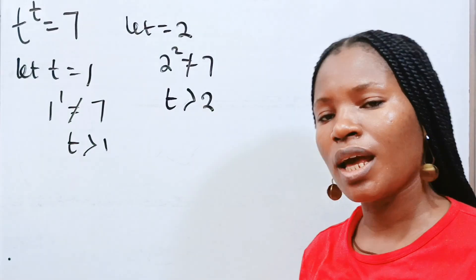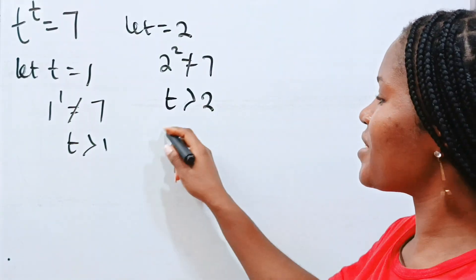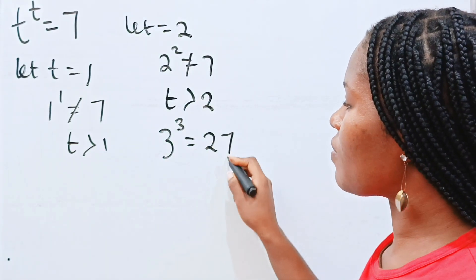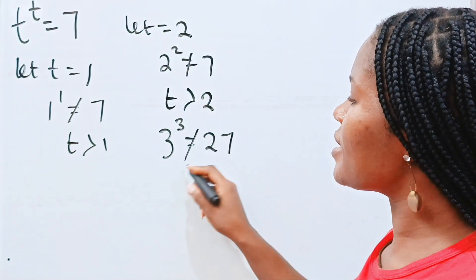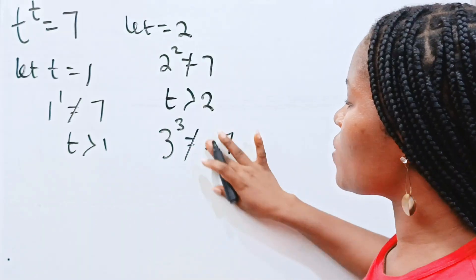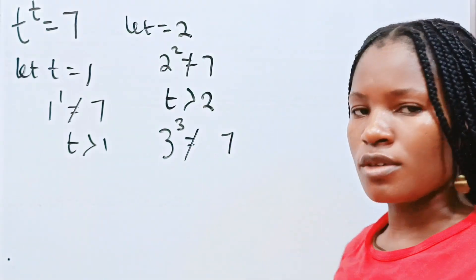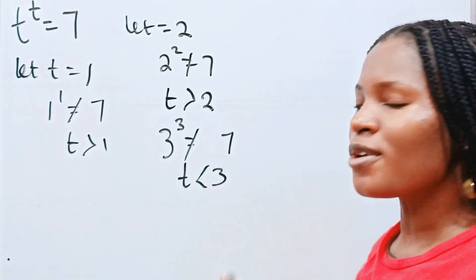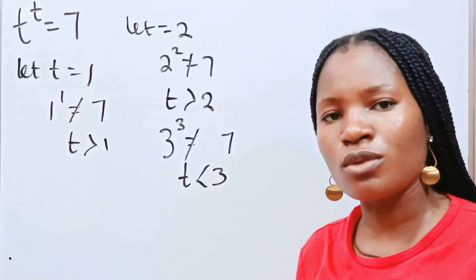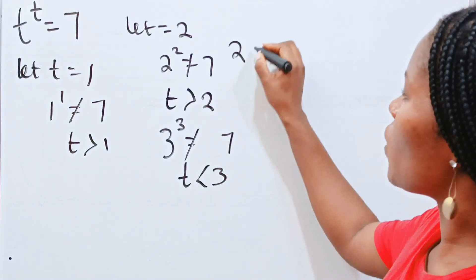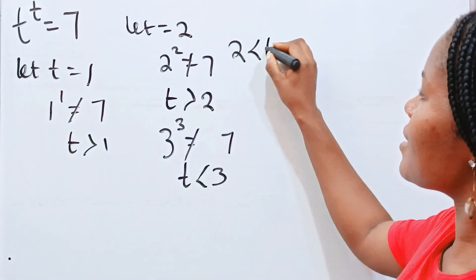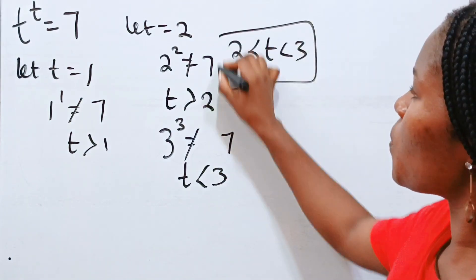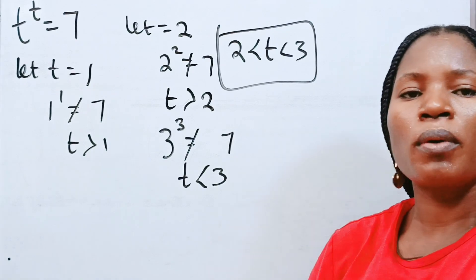If we go to 3 — that is, if we say 3 to the power of 3 — it is equal to 27. So it is not equal to 7. So it simply means that t is less than 3. What we now have is 2 is less than t, which is less than 3. This is the range of t.